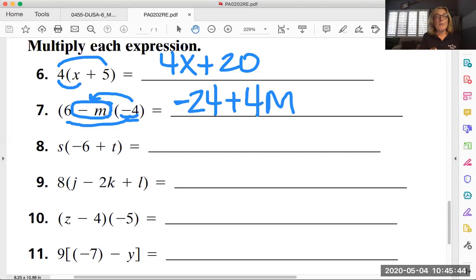Okay number eight we have s times the quantity of negative six plus t. Again the number in front of the group can be a variable. So again the pattern is still the same: s times negative six is negative 6s, s times t just like it sounds, st.